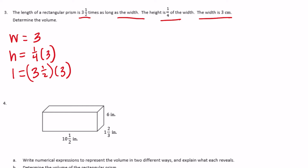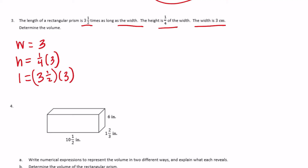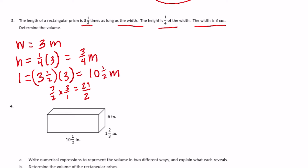We need to figure these out before we can find the volume. One-fourth times three is three-fourths centimeters for the height. For the length, three and a half as an improper fraction is seven halves; seven halves times three over one is 21 halves, which equals ten and a half centimeters.